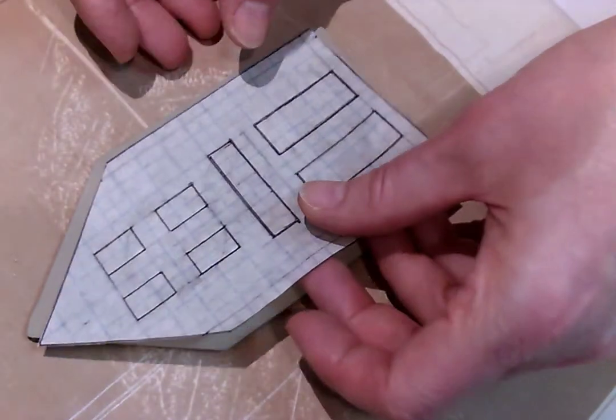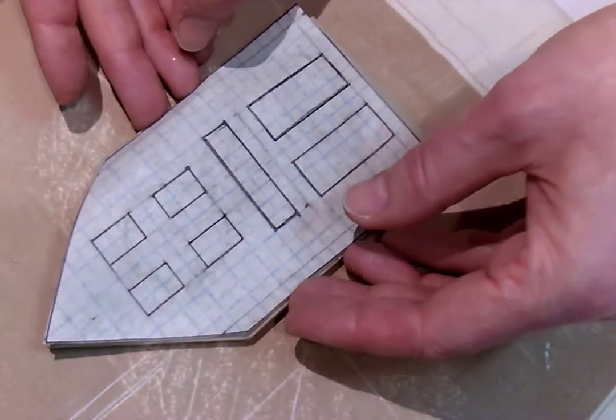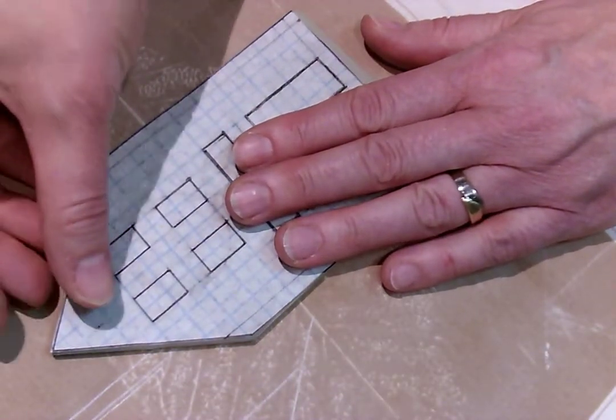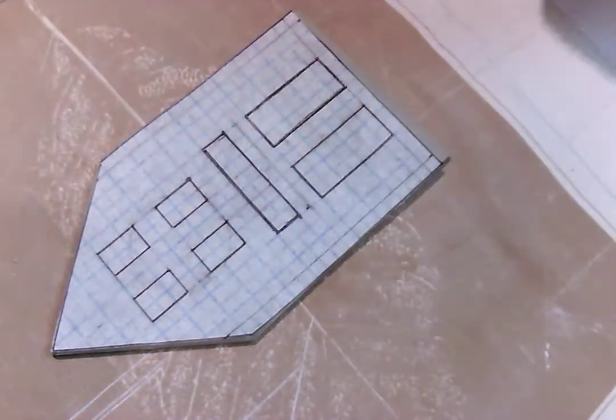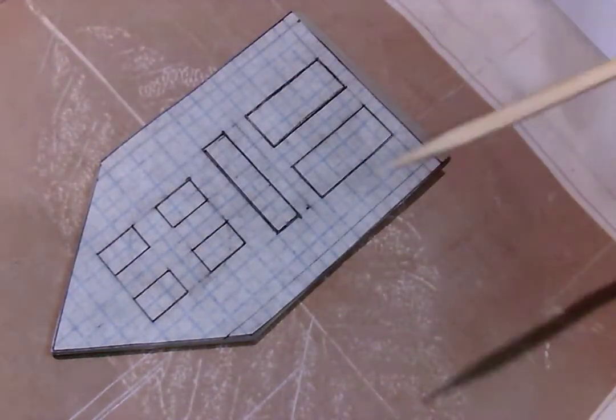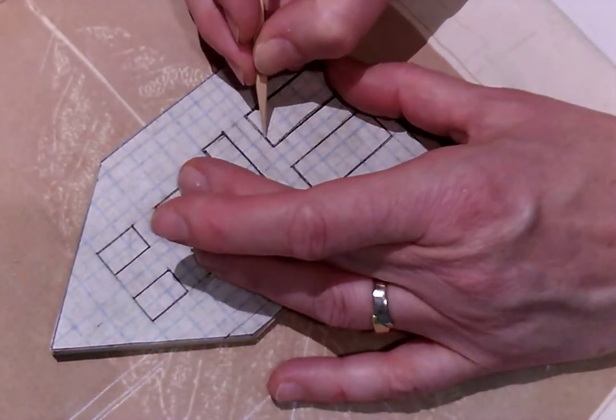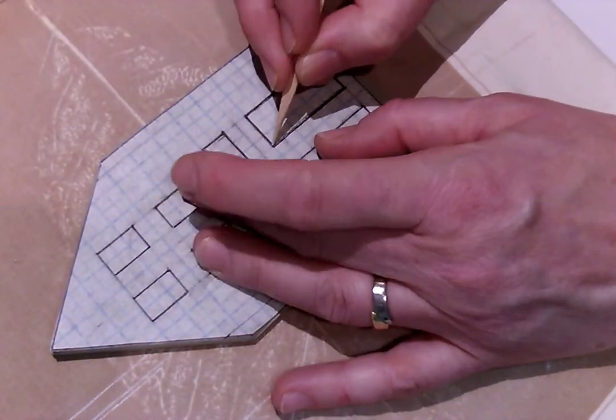Firstly lay the template over the house facade and line it up. Now use the skewer to go over the lines to transfer the design onto your house facade.